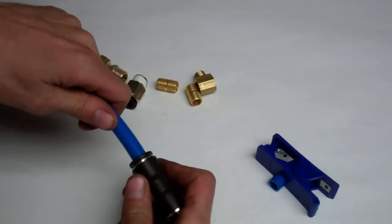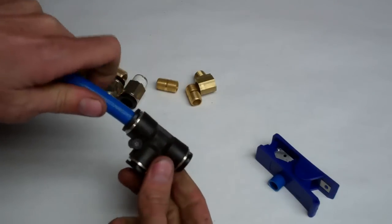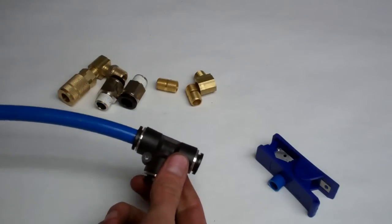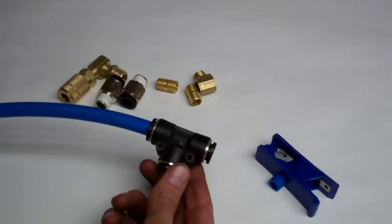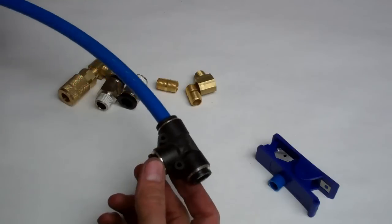So here is an example of one of the fittings. This is a T. So you simply line it up, press it in and that's it. It's locked. I think the manufacturer said it was good up to around 130, 140 PSI, which is just fine for most compressors.